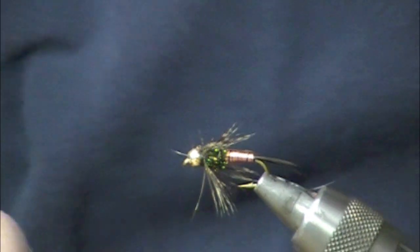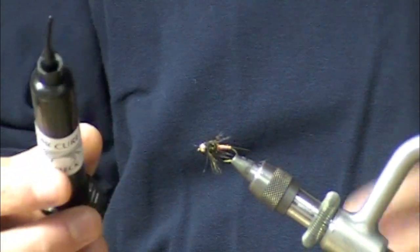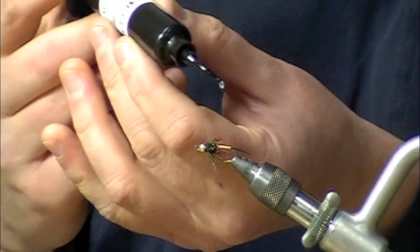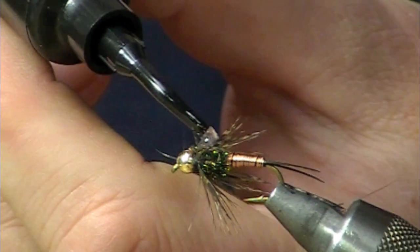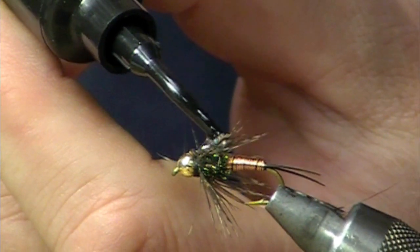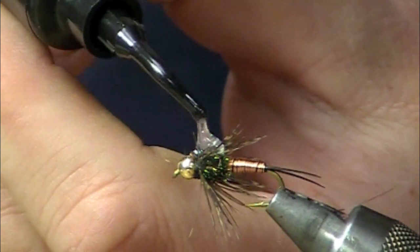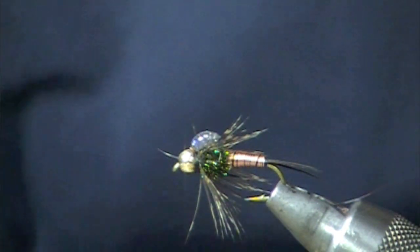So we have a new product here called Clear Cure Goo. This is the fleck version so it's got a kind of a sparkly finish, which kind of does the flashaboo. A lot of people would have tied a flashaboo bit in there and this is kind of flashaboo and epoxy bead at the same time. That stuff is super easy to use. That stuff is not drying, it is just on there until you hit it with the UV light. So that wing case is instantly built up.